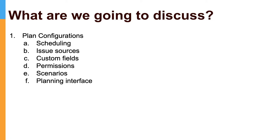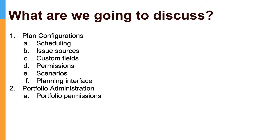Right now we are using the new improved interface, but in case you want to use the old live plan, you can do that by going to the planning interface options. There are also some Portfolio administration options you should know, like how to change the Portfolio permissions that are applicable on all the plans, and how you can change the hierarchy configurations of your portfolio, which is very important if you want to do more than three levels — maybe you want to use initiatives or your own issue type. You can always change the hierarchy of the portfolio, which is applicable for all plans.